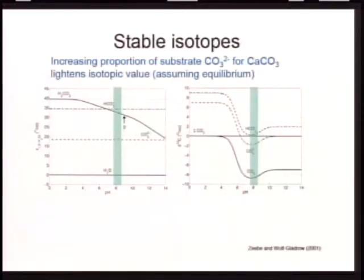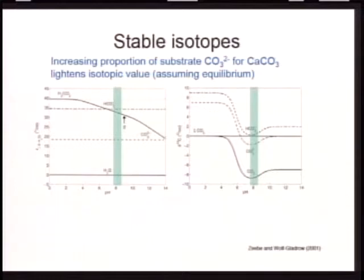In order to determine that, we used stable isotopes as our tool. The key feature is that each of the different carbon species, as we dissolve CO2 in water, has a slightly different isotopic composition. For both oxygen isotopes and carbon isotopes, the carbonate ion tends to have a lighter stable isotopic composition than the bicarbonate ion. That's the key fact we'll use to interrogate the physiology of these two coccolithophores in the changing carbon system.